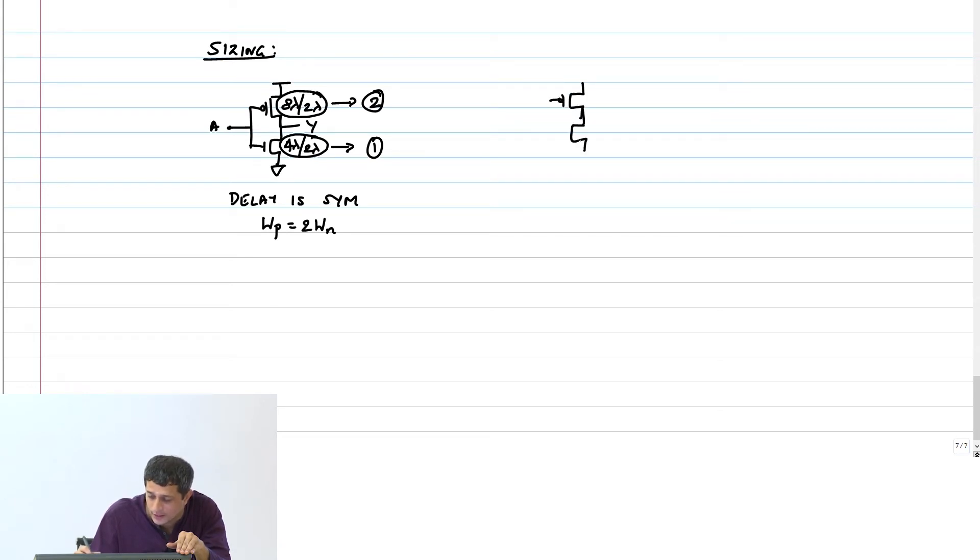So from now onwards I will just write a CMOS inverter like this. I will say 1 and 2. You must interpret it as the width alone is doubled for the PMOS transistor. And this is what I will also call a reference CMOS inverter.